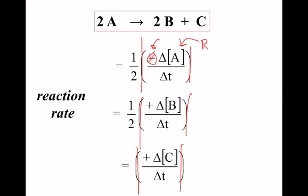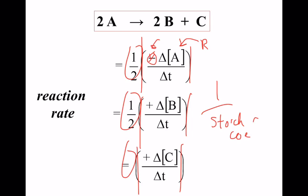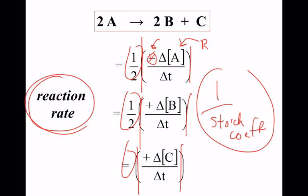The bottom line: in all cases, we take one over the stoichiometric coefficient. The stoichiometric coefficient of C is one, so it stays the same. It makes sense that you don't want different reaction rates depending on what you chose to track — there's only one reaction rate. Your homework due Monday will involve going back and forth looking at reaction rate and how it relates to the rate of change observed in reactants or products.